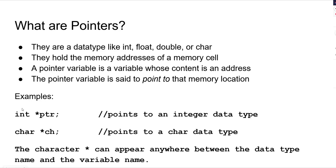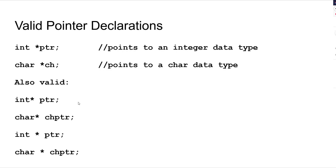The asterisk can appear anywhere between the data type and the variable name — it can appear next to the data type or next to the variable. So a pointer is declared with an asterisk. Here are some valid pointer declarations: int* ptr says PTR is a pointer that will point to an integer memory location. char* ch says ch is a pointer that points to a char data type. You can also write it in different formats, with the star in between or next to the data type.